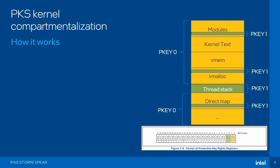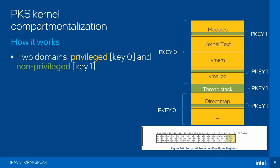Let's get into how this actually works — how we can do compartmentalization with PKS. As already mentioned, we have basically two domains. For clarity, let's define them: we have a privileged domain and a non-privileged one. Key zero is the privileged key and key one is the non-privileged key. In the privileged domain, you can access all kernel memory — basically everything should be accessible. If you're in the non-privileged domain — that's the more restrictive one, where you're inside eBPF or entering an address space isolation section — you're only supposed to be able to access things mapped under protection key one, really the minimal set of memory. If you're in the non-privileged domain and try to access anything else — for example, the kernel text — you should get a fault.